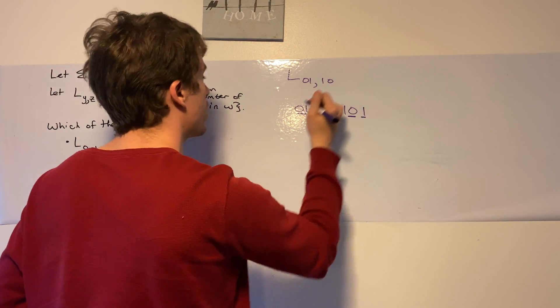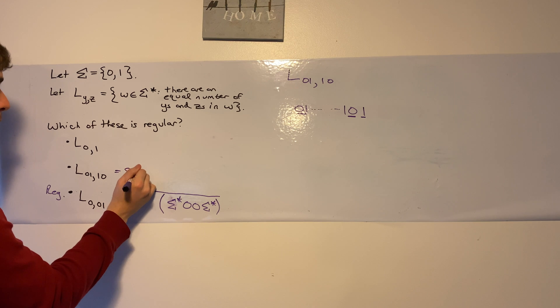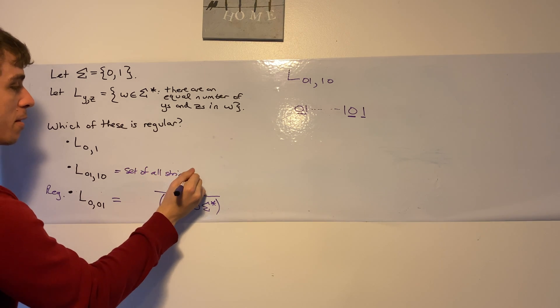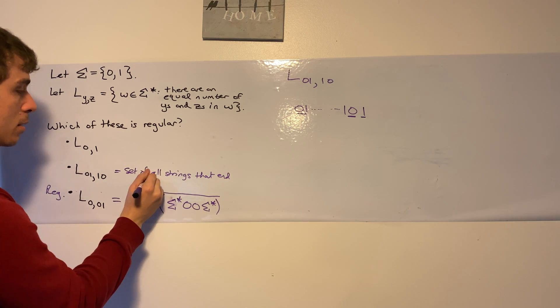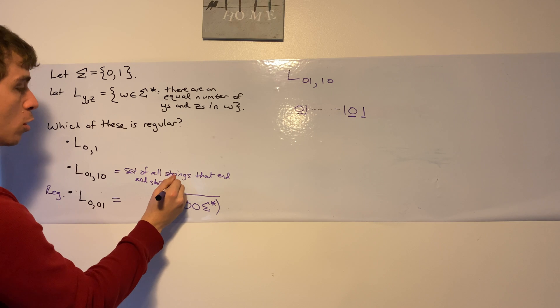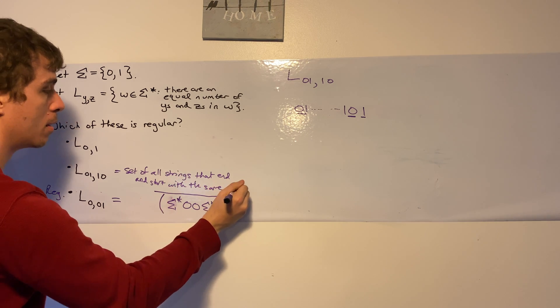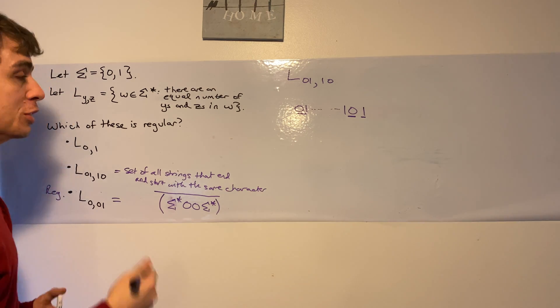So we can actually rephrase this language that end and start with the same character. Because it has to alternate between the 0, 1s and the 0s and the 1s here.